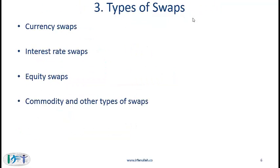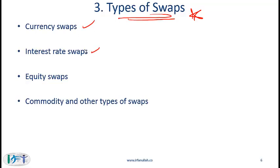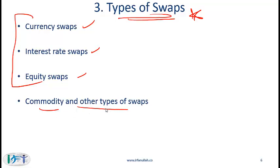Now we come to the major component of this reading: different types of swaps. As with other derivative contracts, the type of swap is defined by the underlying. So if the underlying is a currency, we have a currency swap; if the swap is based on an interest rate, we have interest rate swaps, and so on. We will focus on three types here. We can also have commodity swaps and others, but these are not in the learning objectives so we will not cover them.